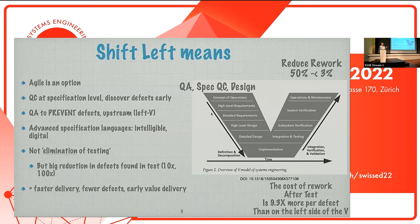The point is this: everybody knows that one of the major sources of problems in systems is that the upstream requirements were badly done, badly quality controlled, and are full of defects. So the defects get into the architecture, and they get into the system, and they get into the testing, and everything's a mess.